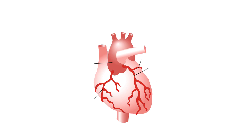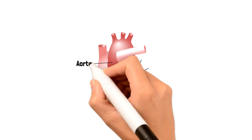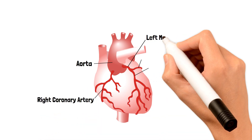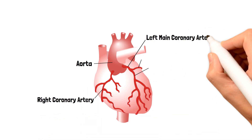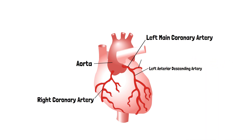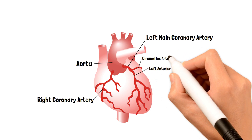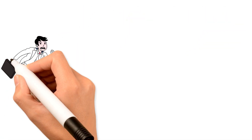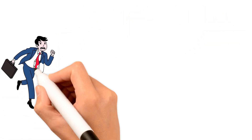The ascending aorta divides into two main branches: the right coronary artery and the left main coronary artery, which divides into the left anterior descending artery and the circumflex artery.